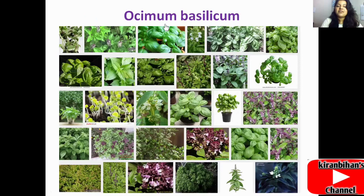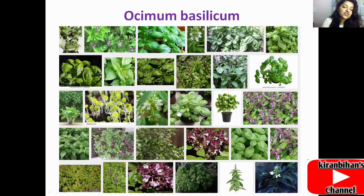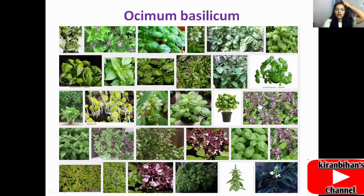Here you can see in this picture that Ocimum basilicum has red colored flowers. The leaves are really green in nature, very green in appearance — they are leafy and show a spongy type of nature. The flowers of Ocimum basilicum are red in color, as you can see here.